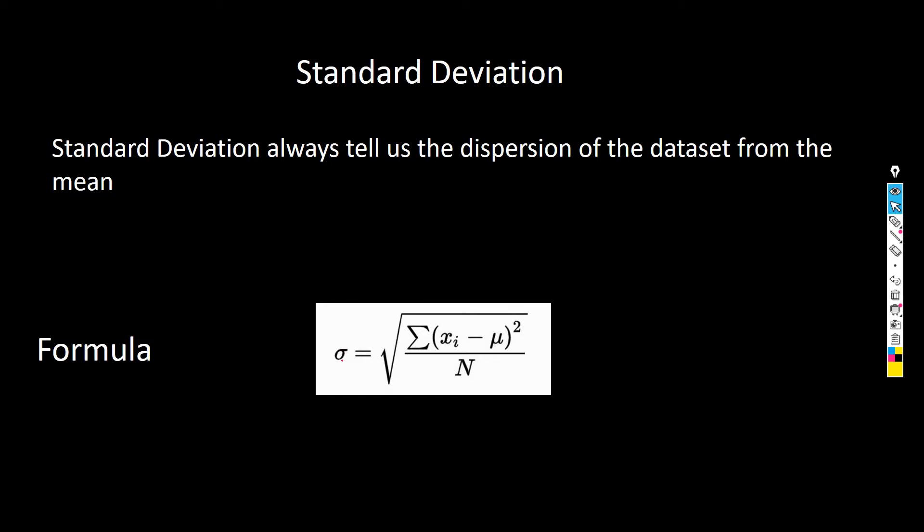The formula is sigma equals under root of summation of xi minus mu whole square upon N. Here xi is our data point, a particular data point.